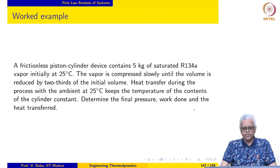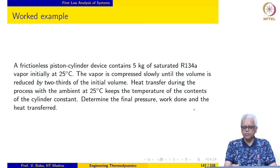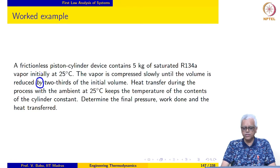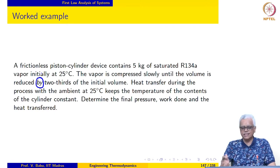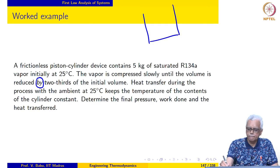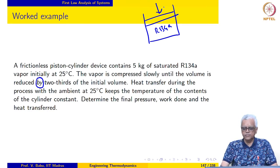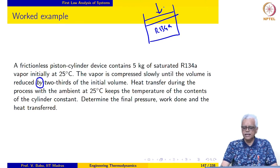Let us look at the next example. A frictionless piston-cylinder device contains 5 kg of saturated R134A vapour initially at 25 degrees Celsius. The vapour is compressed slowly until the volume is reduced by two-thirds — please pay close attention: the volume is reduced by two-thirds of the initial volume. Heat transfer during the process with the ambient at 25 degrees Celsius keeps the temperature of the contents constant. We need to determine the final pressure, work done, and heat transfer.